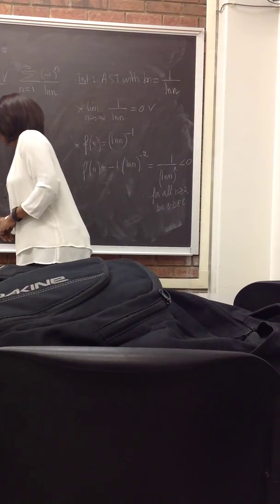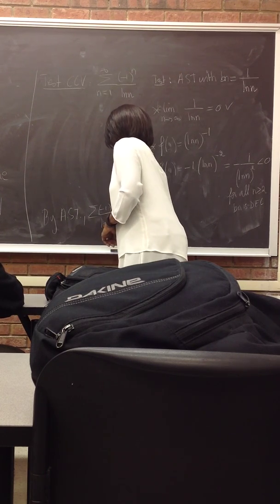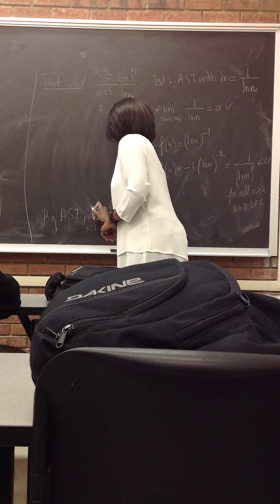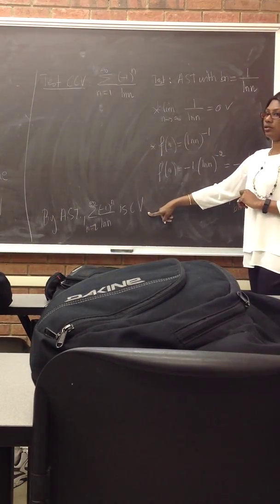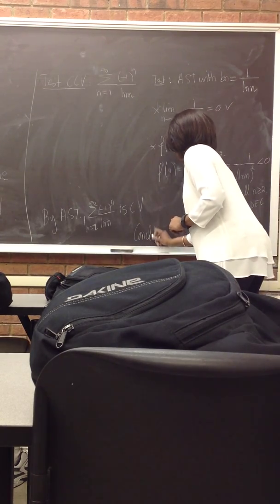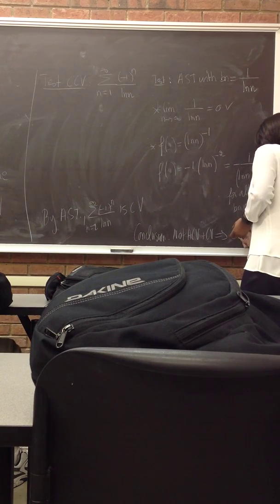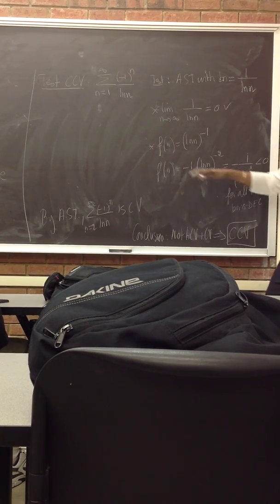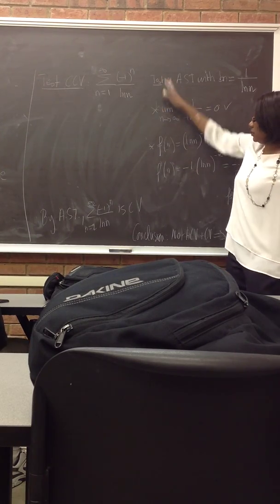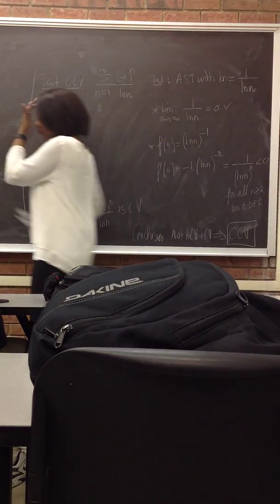So conclusion? So we have not ACV, but CV. So the conclusion is conditional. Conditional. So conclusion, the big one now. Because I have not ACV, but somehow it converges, then the answer is CCV. And that's the second possibility when you have CCV. So you see, when you do CCV, ACV doesn't work first. But then you use AST or whatever to check if it converges. If it converges, then we have CCV. And if it doesn't converge, then we don't have CCV. There is no form of convergence, so it has to be divergent. And that would be the third one. Thank you.